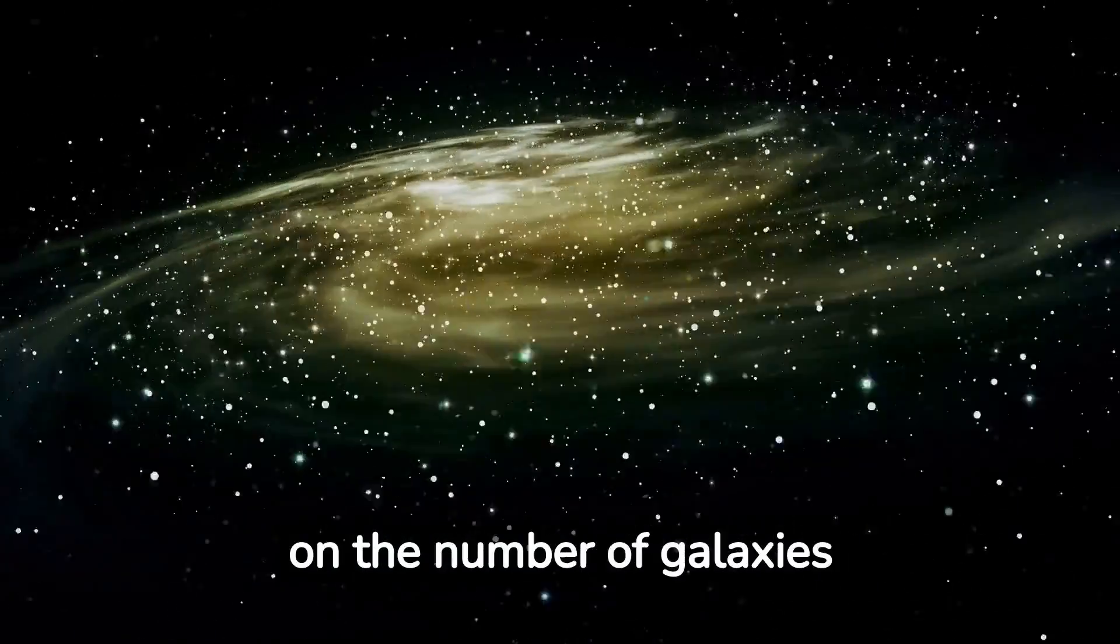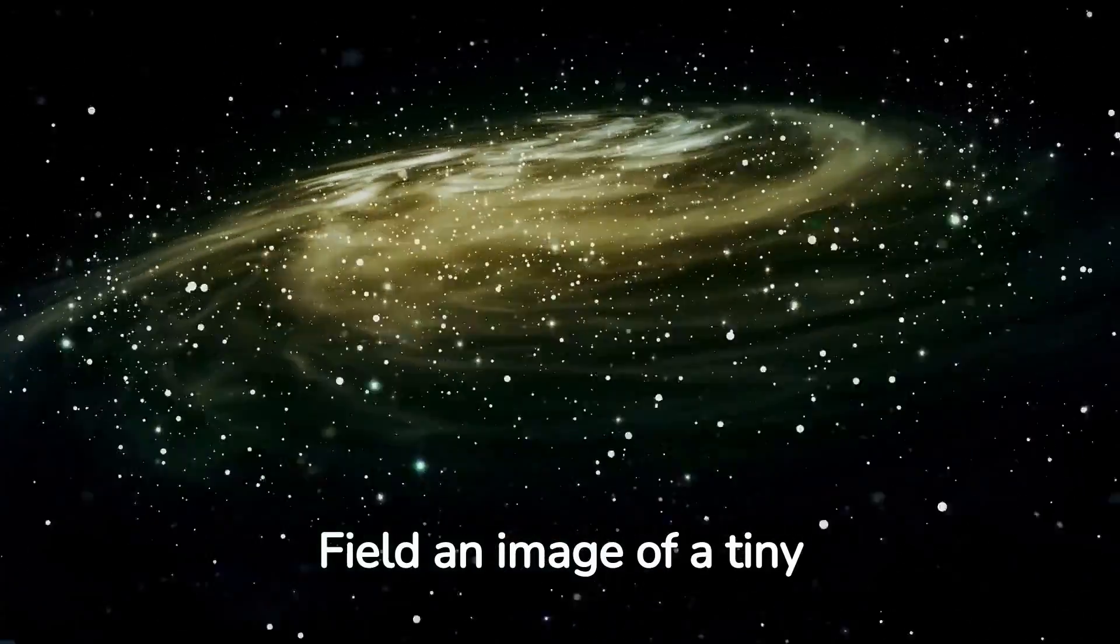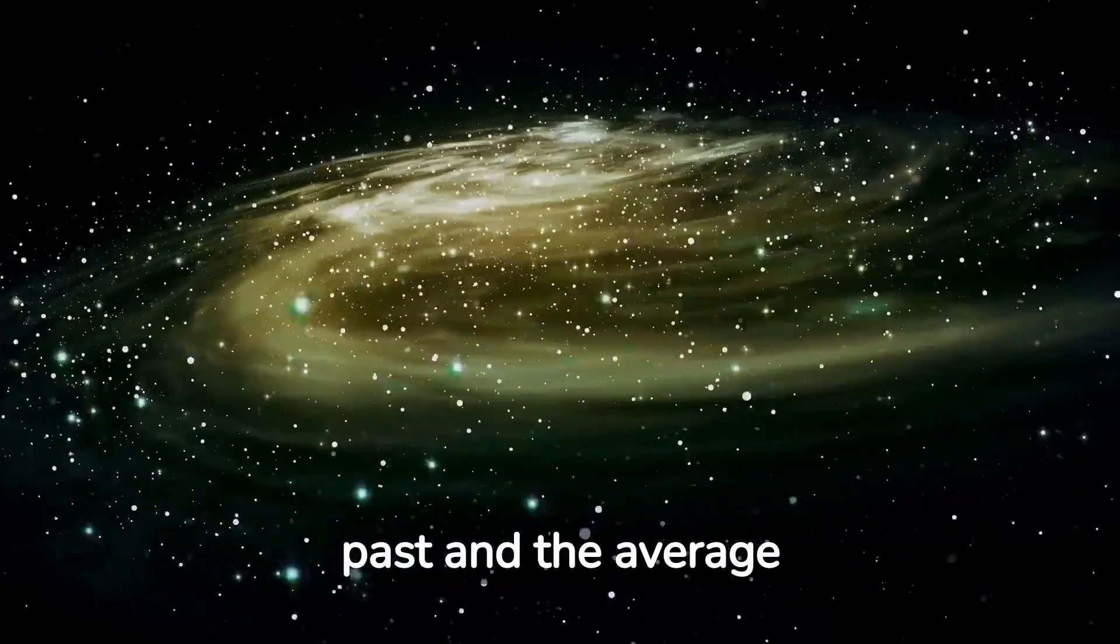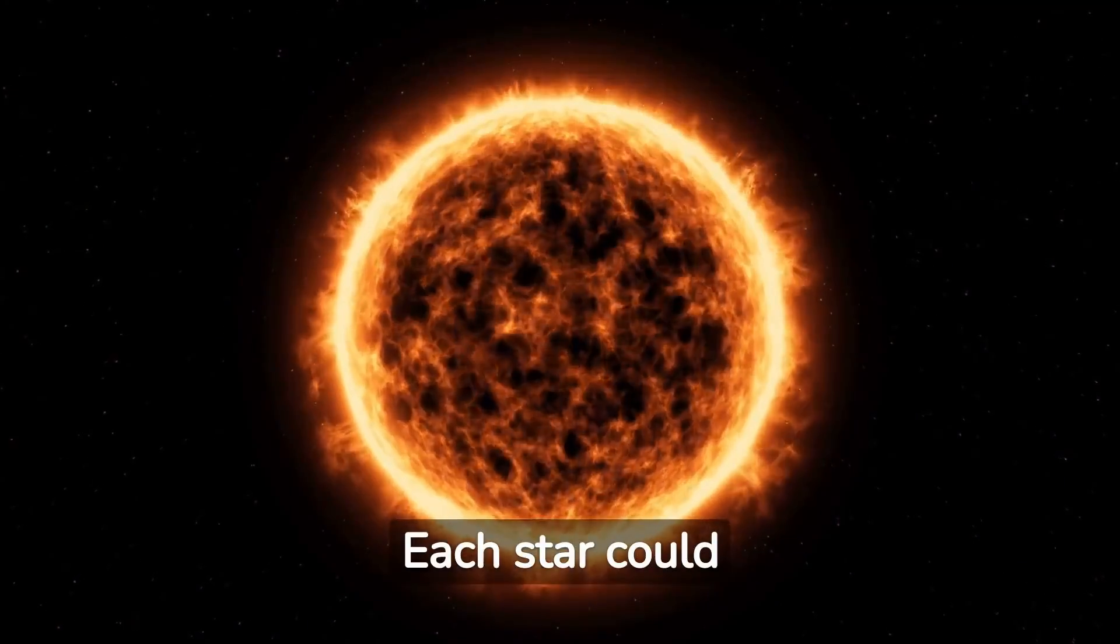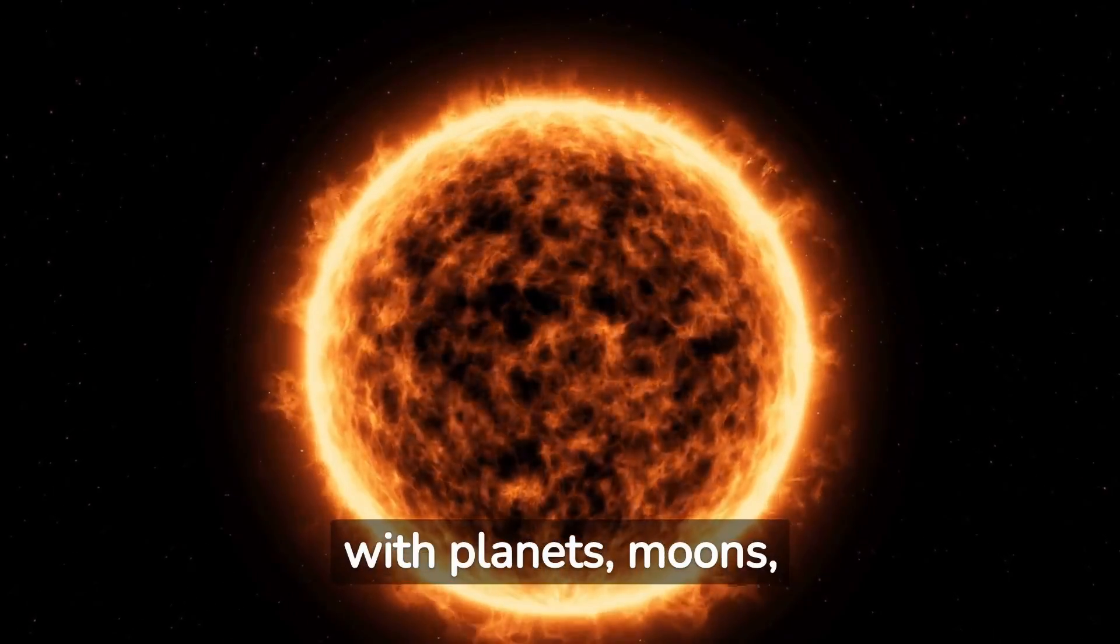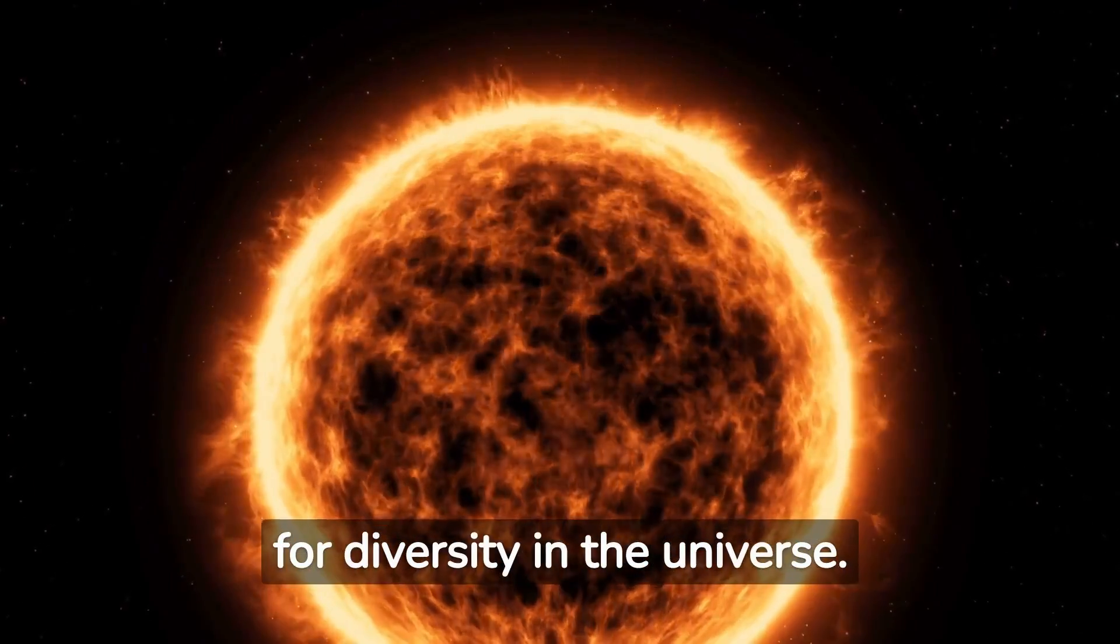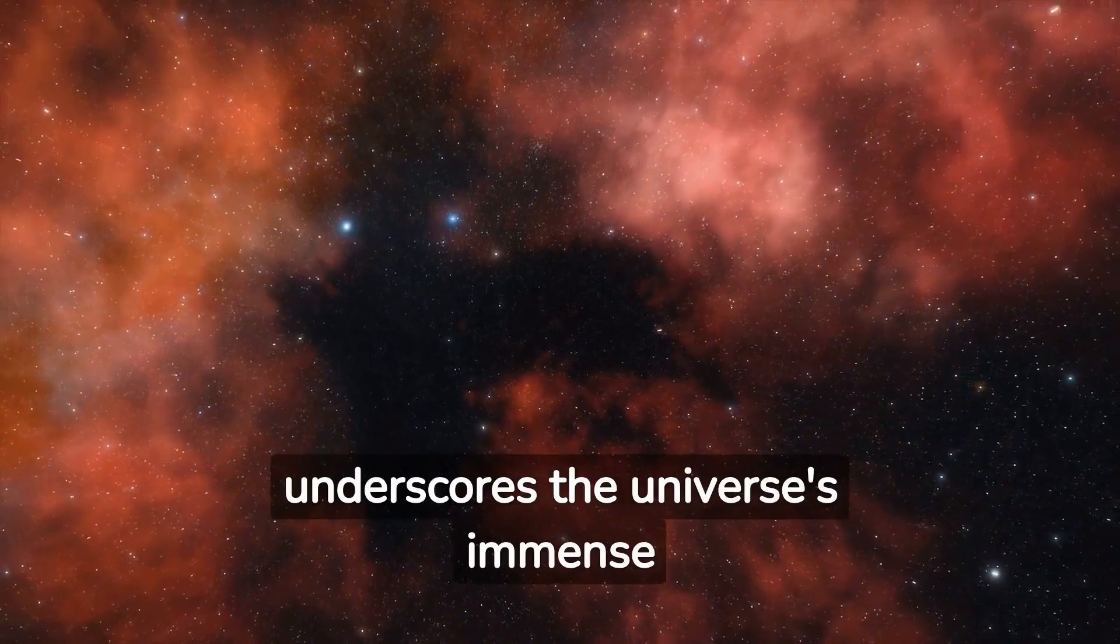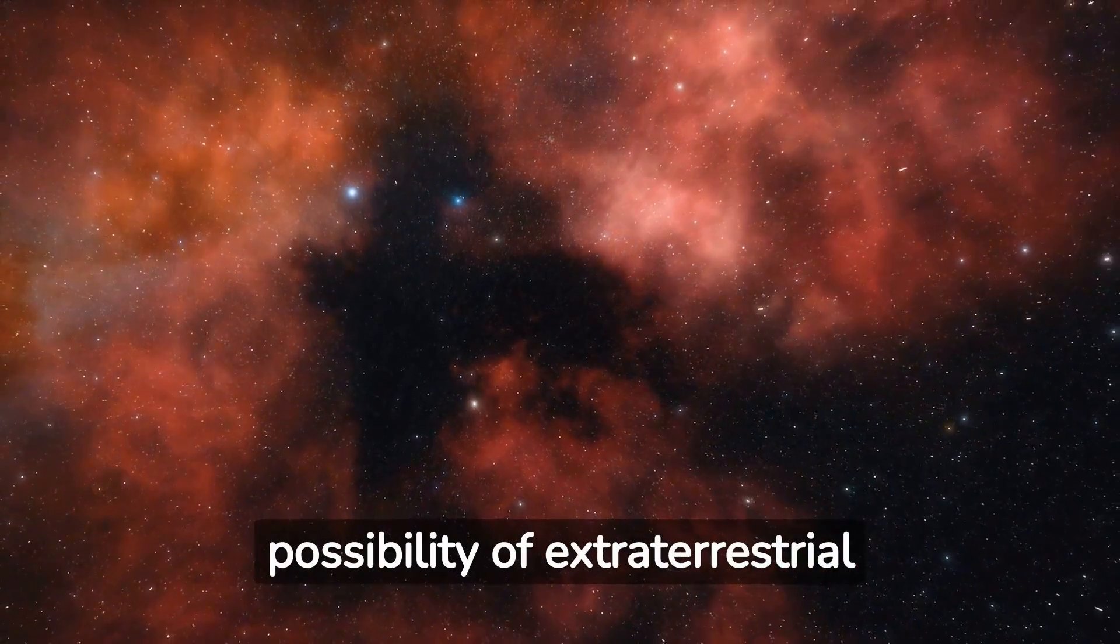This estimate is based on the number of galaxies observed in the Hubble Ultra Deep Field, an image of a tiny segment of space that offers a window into the universe's past, and the average number of stars believed to exist in each galaxy. Each star could potentially be a sun with its own planetary system, complete with planets, moons, and asteroids, suggesting a remarkable potential for diversity in the universe. This staggering number underscores the universe's immense scale and sparks intriguing questions about the possibility of extraterrestrial life.